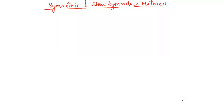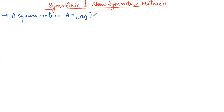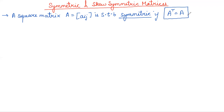Now we will study symmetric and skew-symmetric matrices. In the last video we studied the transpose of a matrix — when we interchange the rows with columns and columns with rows, we call it the transpose. Now on this topic we are studying symmetric matrices and skew-symmetric matrices. A matrix is said to be symmetric if A transpose is equal to A — the transpose gives back the same matrix.